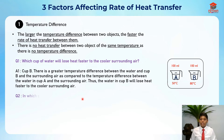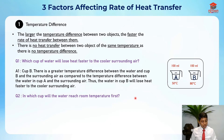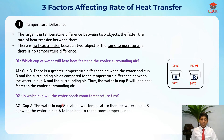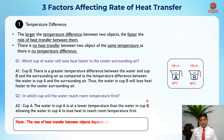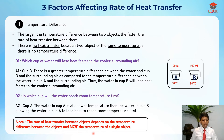Question two: in which cup will the water reach room temperature first? The answer is Cup A, because the water in Cup A is at a lower temperature than Cup B, allowing it to lose heat and reach room temperature first. Remember: the rate of heat transfer between objects depends on the temperature difference between the objects, not the temperature of a single object.